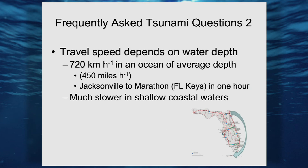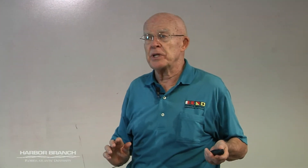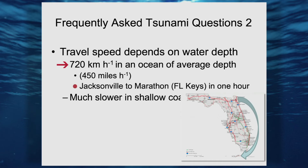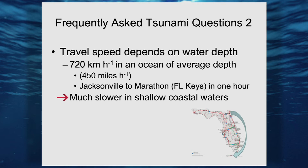Frequently asked tsunami question number two: how fast do these things go? It depends upon the water depth. In an average depth in the open ocean — about 3,800 meters or so — it would be cruising along at about 720 kilometers per hour, which translates to 450 miles per hour. Just to give you a feeling: from Jacksonville down to Marathon is about 450 miles, so if a tsunami moved through water of average ocean depth, it would get down to Marathon in about an hour. Tsunami move more slowly in shallow water.